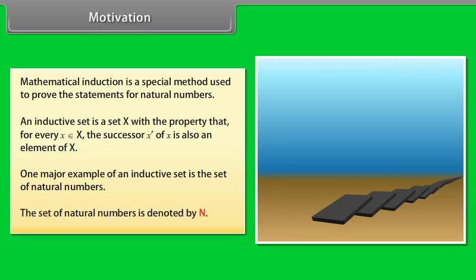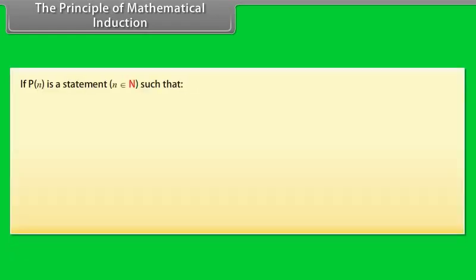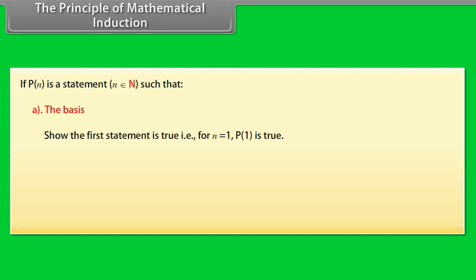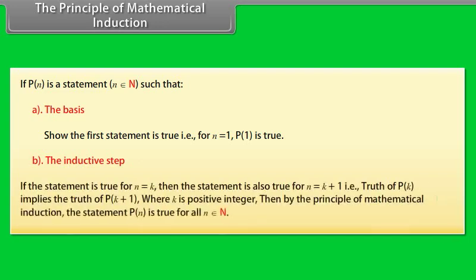The set of natural numbers is denoted by N. The principle of mathematical induction: If P(n) is a statement, n belongs to N, such that — the basis: show the first statement is true, that is, for n = 1, P(1) is true; and the inductive step: if the statement is true for n = k, then the statement is also true for n = k + 1, that is, truth of P(k) implies truth of P(k+1), where k is a positive integer. Then by the principle of mathematical induction, the statement P(n) is true for all n belonging to N.